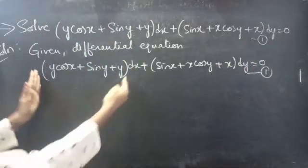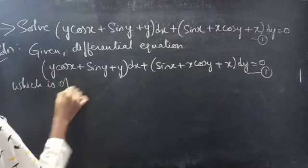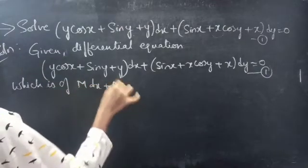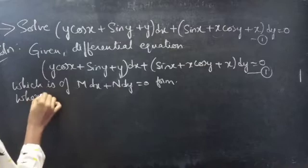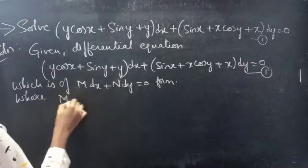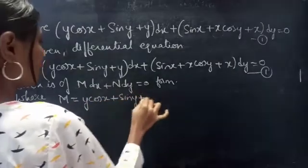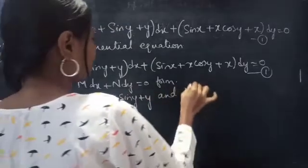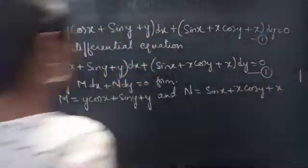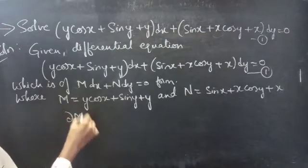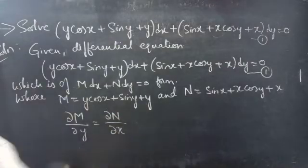This equation is of the form M dx plus N dy equals to 0. Where M equals to y cos x plus sin y plus y, and N equals to sin x plus x cos y plus x. If the partial derivative of M with respect to y is equal to the partial derivative of N with respect to x, then the given differential equation is an exact equation.